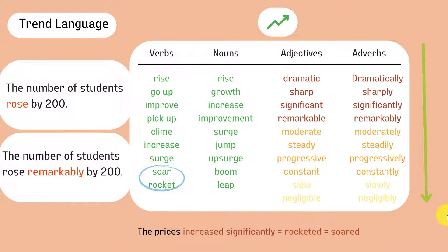There are two basic groups of language that you need to use to describe diagrams – trend language and comparison. We use trend language to describe variables that rise, fall, fluctuate or remain constant across time. We therefore require vocabulary that demonstrates change.